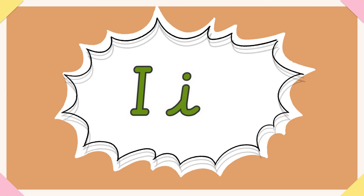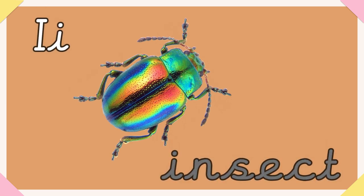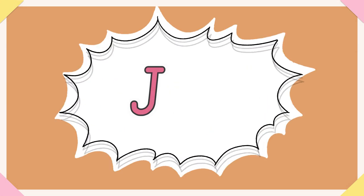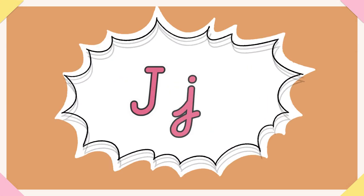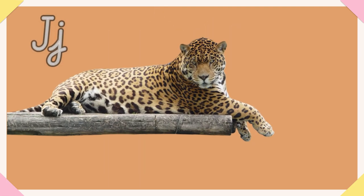The name is I and the sound is E. E for insect. The name is J and the sound is J. J for jaguar.